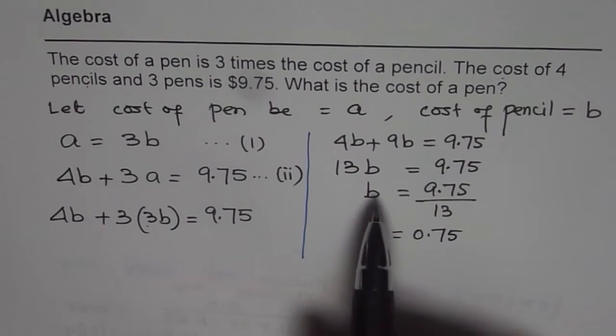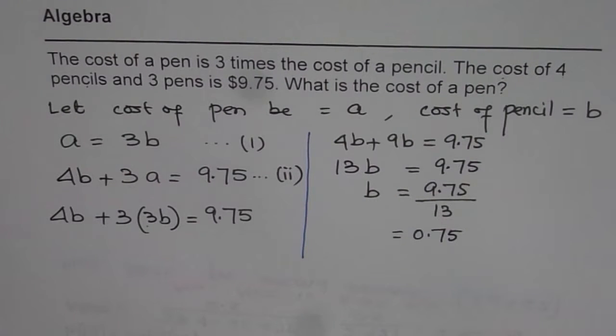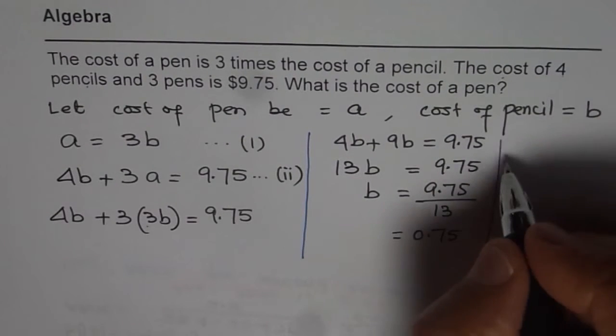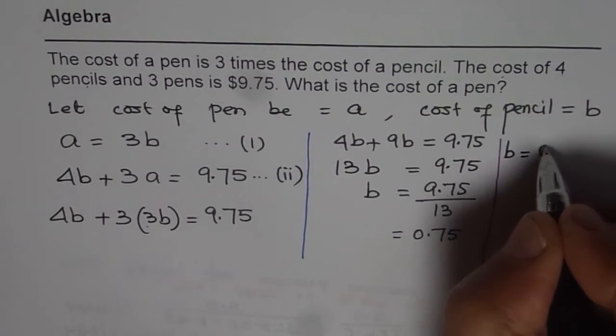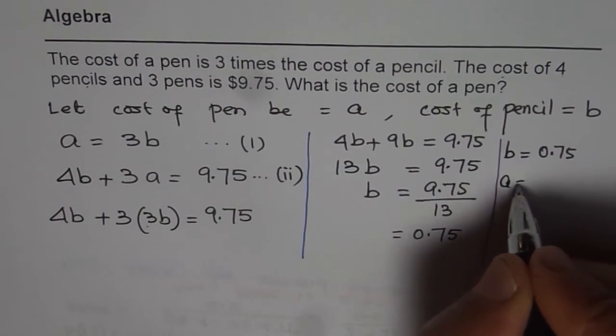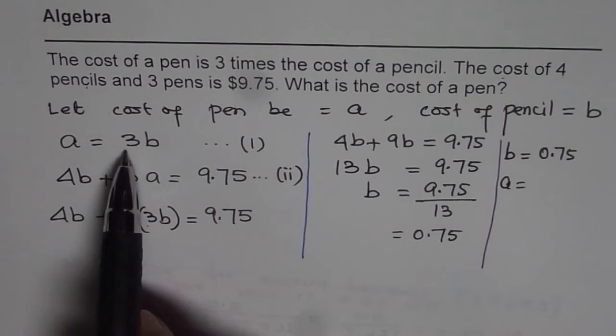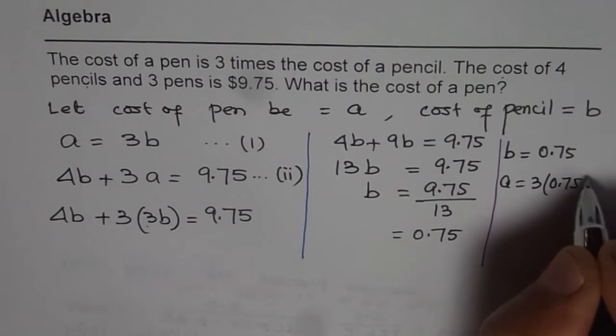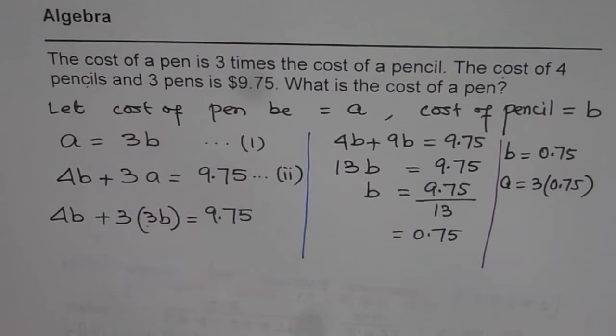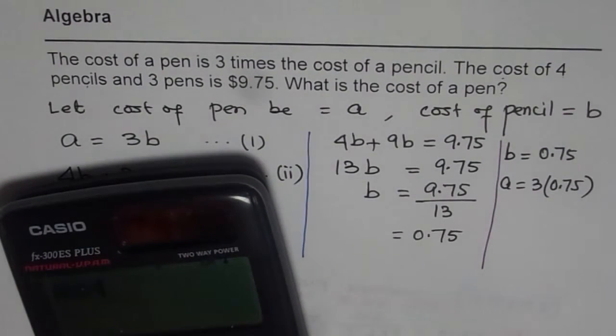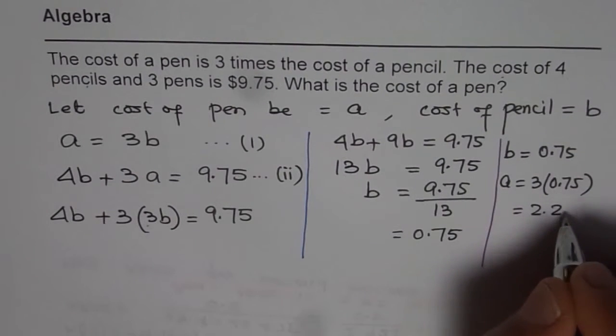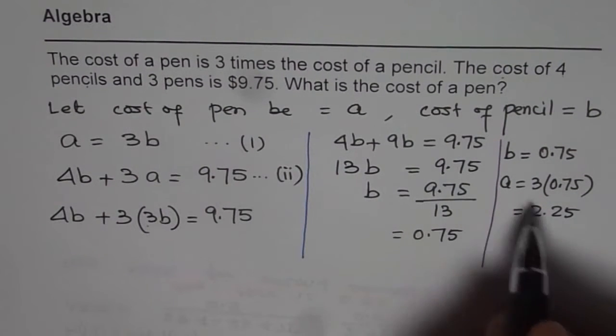So it is 75 cents, the cost of pencil. Now once you know the cost of pencil, which is B equals to 0.75, then what is A? A is 3 times B. So we will multiply this by 3. 0.75 times 3 gives us 2.25. So that is A.